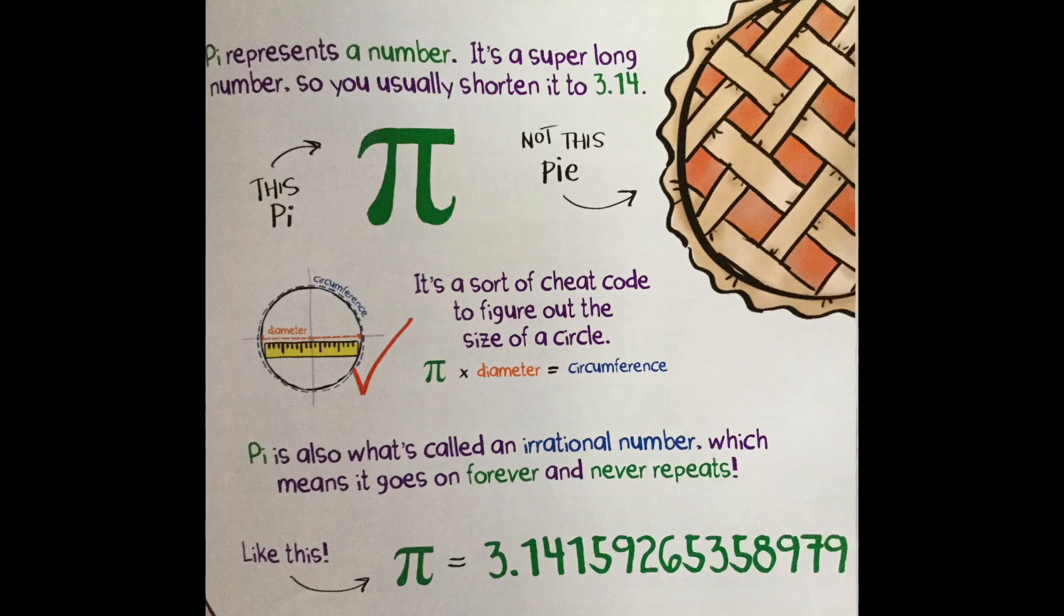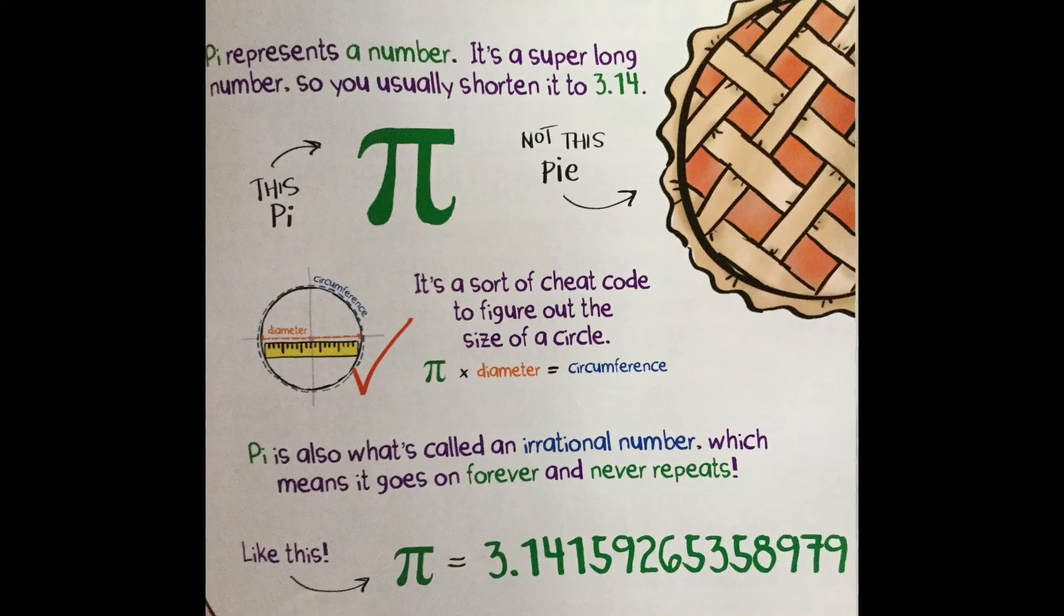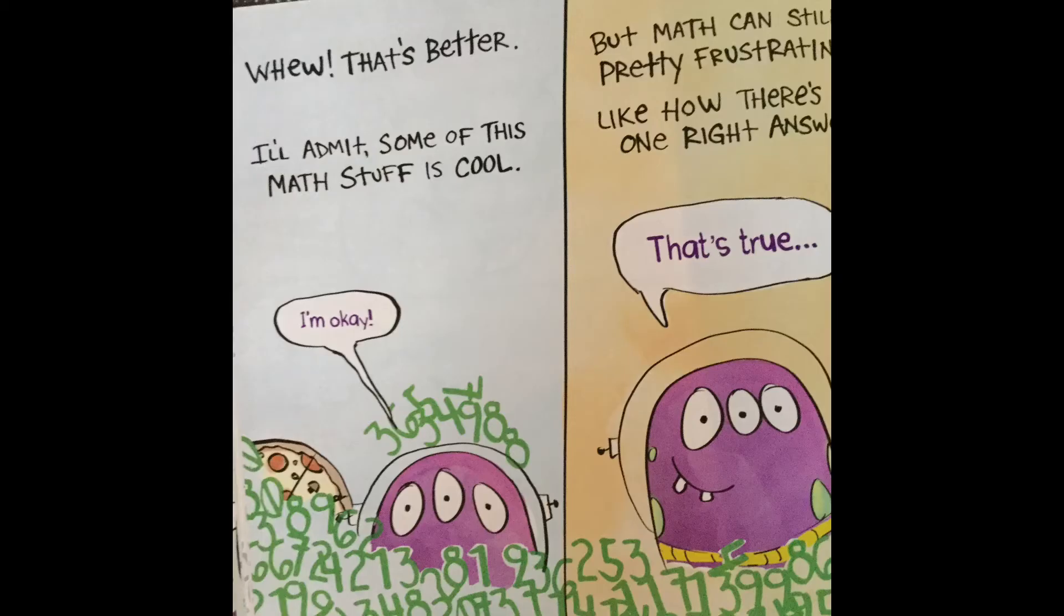Like this. Pi equals 3.14159265358979. Well, that was unexpected. I never thought I'd say this, but this is too much pi for me. That's an easy fix. Let's just grab the book and shake all this pi off the page. Phew, that's better.